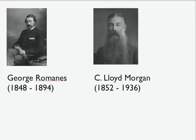In contrast with this approach, C. Lloyd Morgan suggested a much more parsimonious approach to understanding animal behavior, also from an evolutionary perspective. He is particularly well known for introducing this important principle in the interpretation of animal behavior, known as Morgan's Canon.